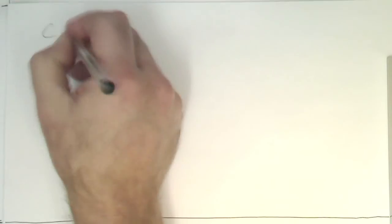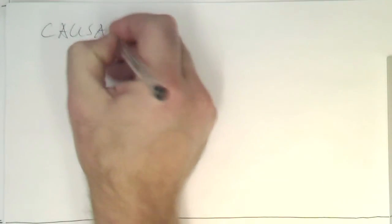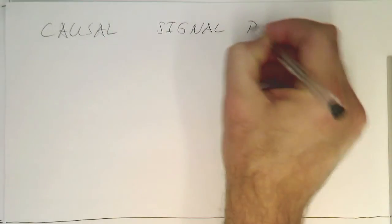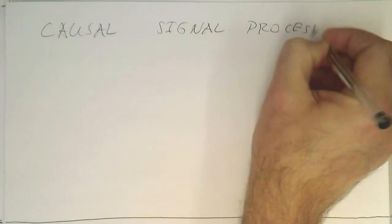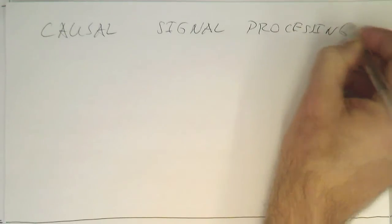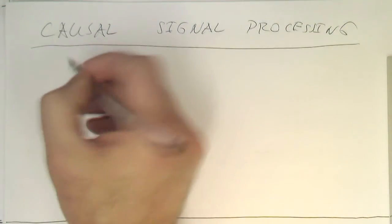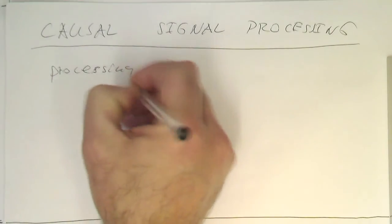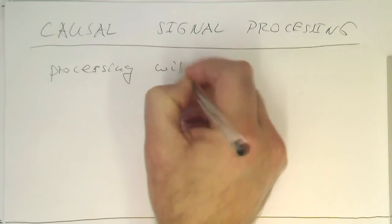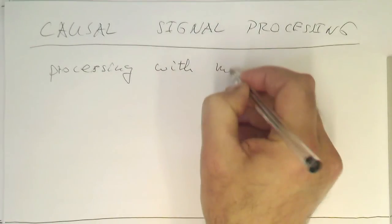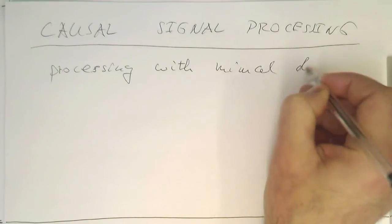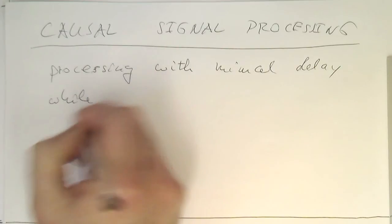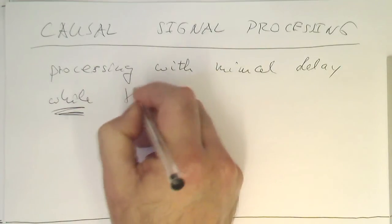So essentially then, causal signal processing is processing with minimal delay while the signal comes in.